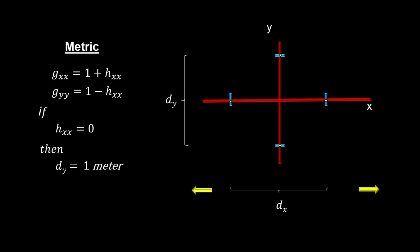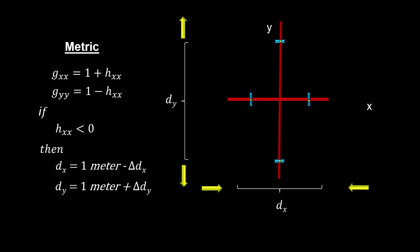At the same time, a one meter distance on the Y-axis will shrink to less than one meter by the same amount. When H returns to zero, the distance between these points returns to one meter. When H is less than zero, the distance between the two points on the X-axis will become shorter than one meter, and the distance between the two points on the Y-axis will become longer than one meter.